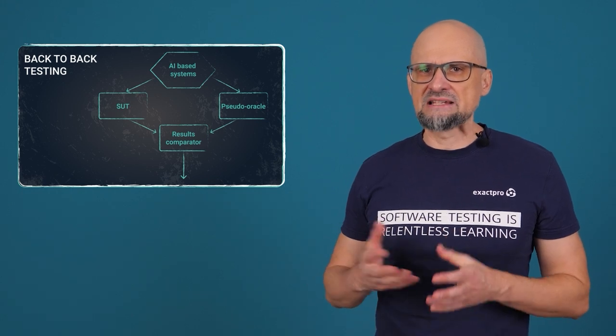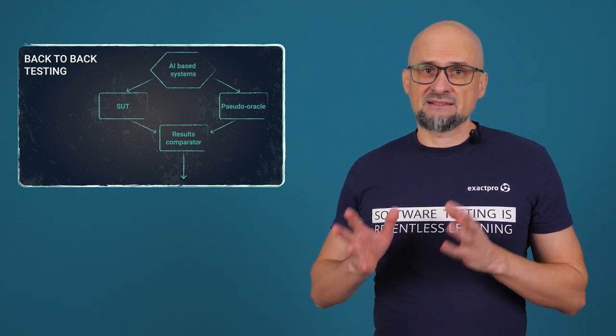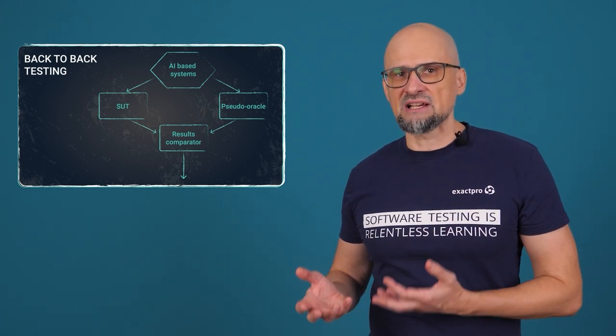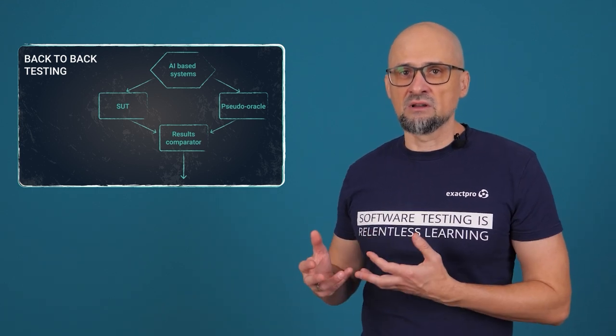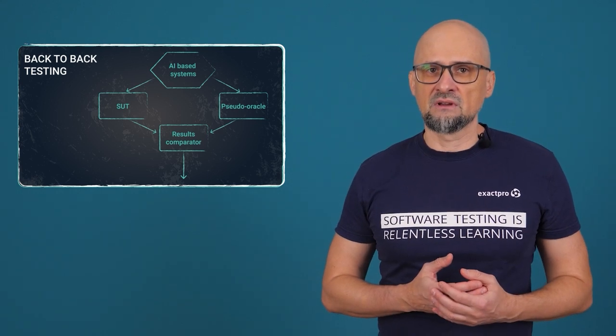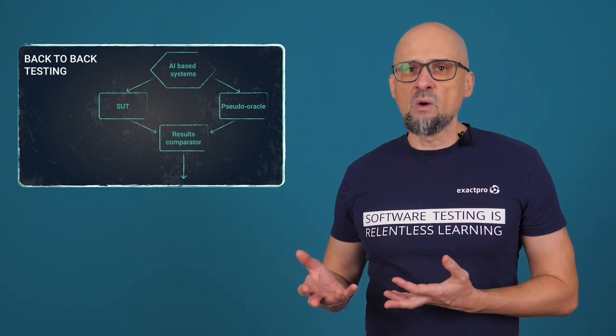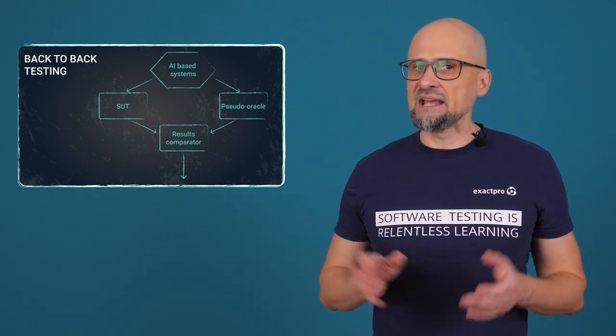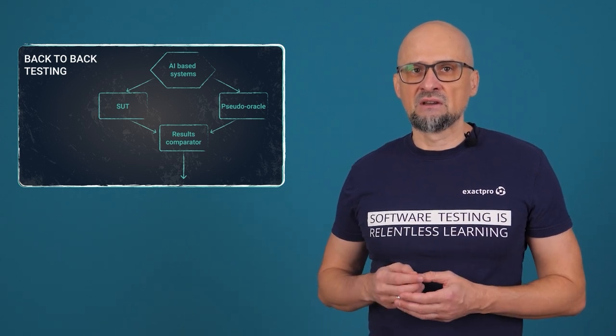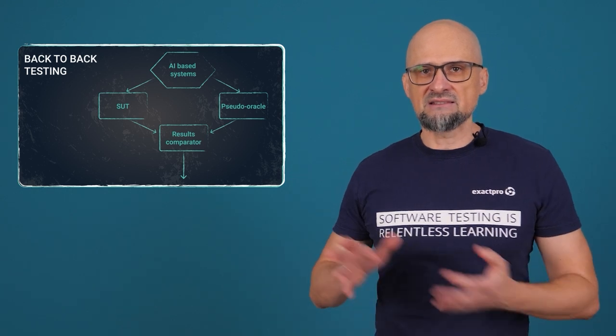When we have a test oracle problem when testing AI-based systems, back-to-back testing or differential testing could serve as a solution. Here, an alternative version of the system is used as a pseudo-oracle, and its outputs are then compared with the system under test results. This pseudo-oracle could be on a different platform, with a different architecture, and with a different programming language. But when we test functionality, we don't have to apply our non-functional acceptance criteria to the pseudo-oracle, which makes it far less expensive. In some situations, it may also be possible to create a pseudo-oracle using non-AI software. For pseudo-oracles to be effective, there should be no common software elements in the pseudo-oracle and the system under test.